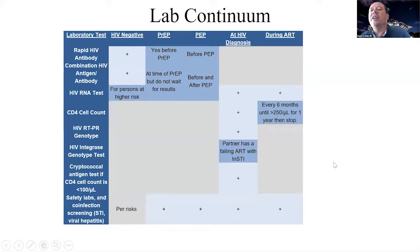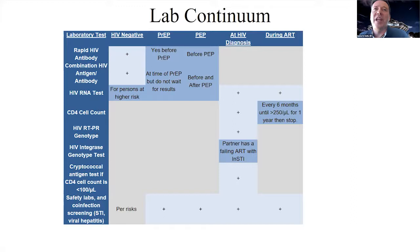During therapy, you do the HIV RNA test. We want you to test for a viral load within four to six weeks after starting — about a month is a good rule of thumb. During therapy, we recommend CD4 counts every six months until 250 or above for a year, then they can be stopped, and continuing co-infection, STI testing, and safety labs.